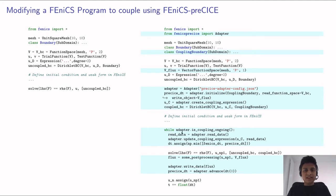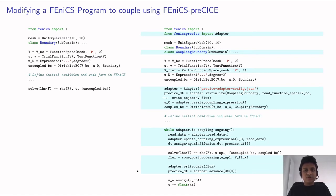Before solving the actual problem, data is read from preCICE using the adapter's read data function. After the data has been received, the coupling expression at the coupling boundary is updated with this data. Once the update is done the problem is solved. After solving, the relevant data to be written back to preCICE is extracted, and the adapter write data command is used to write it. Once both reading and writing are done, the advance command of the adapter is called. For implicit coupling, additional checkpointing commands need to be added.